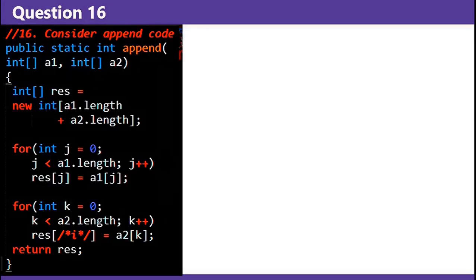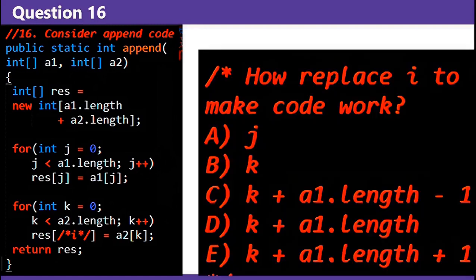Question 16 copies two arrays into a larger one. The correct replacement for the i comment is k plus a1.length, as it ensures that the second array is written after all the other data already copied from the first array.